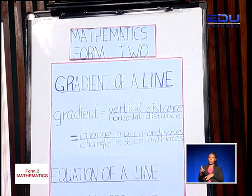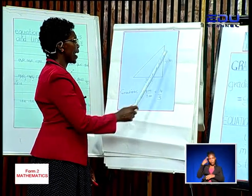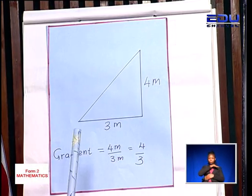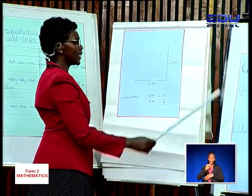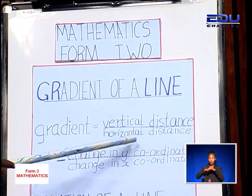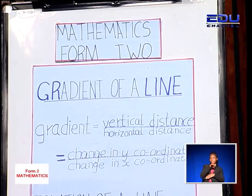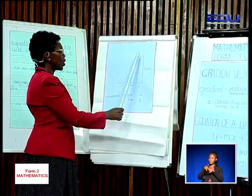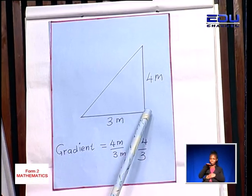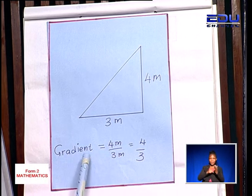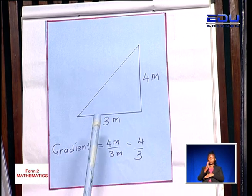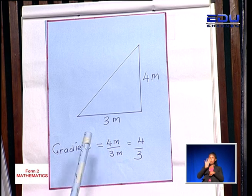I have a diagram here, and in this diagram the length here is 4 meters and the width here is 3 meters. We have said the gradient is a ratio of the vertical distance over the horizontal distance. The vertical distance is 4 meters and the horizontal distance is 3 meters. So the gradient is equal to the vertical distance over the horizontal distance, which is equal to 4 meters over 3 meters.